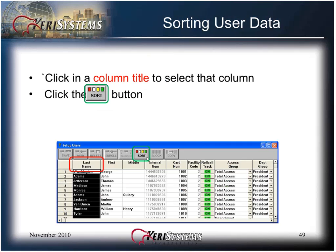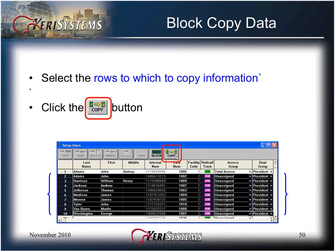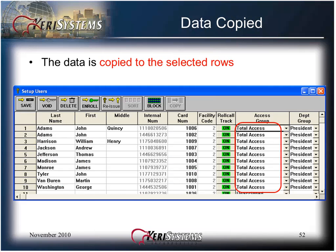The user spreadsheet can be sorted in ascending order, lowest to highest value, using any category. Click in a column title to select that column and then click the Sort button. The block copy data operation quickly copies data from one user to multiple users. Click in the cell with the data to copy, then click the Block button. Select the rows to which to copy the information — click on the first row and drag to the last row for consecutive rows, or hold the Control key and click on selected rows if they are not consecutive. Then select the Copy button and the data is copied to the selected rows.